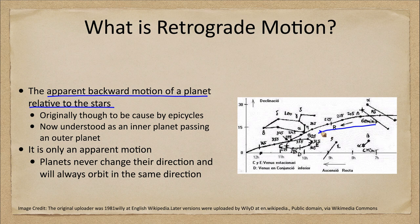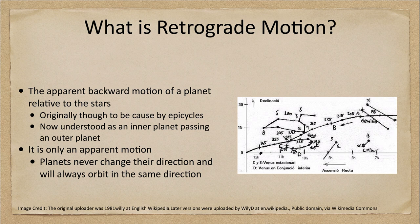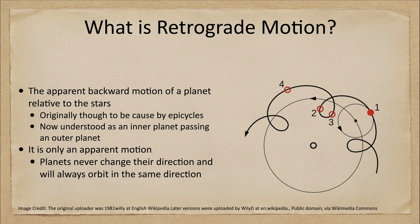The planet is heading in this direction and then all of a sudden it loops, turns around and goes backwards, and then starts heading forward again. This loop is what we call the retrograde loop. Originally, this was thought to be caused by epicycles, and that was when we considered the Earth to be the center of the solar system.